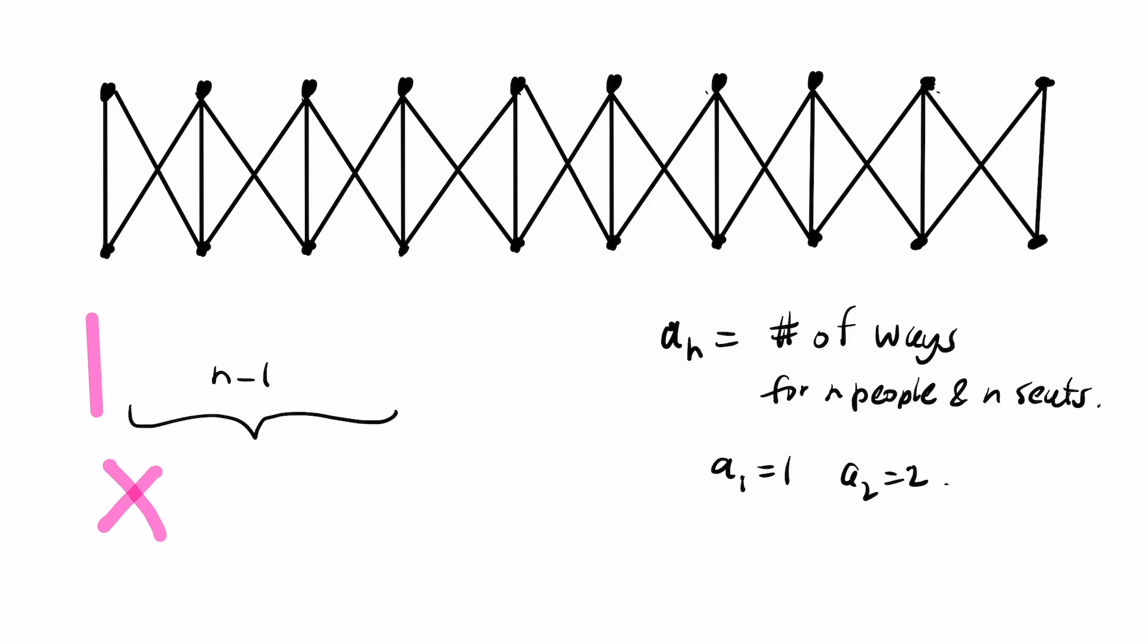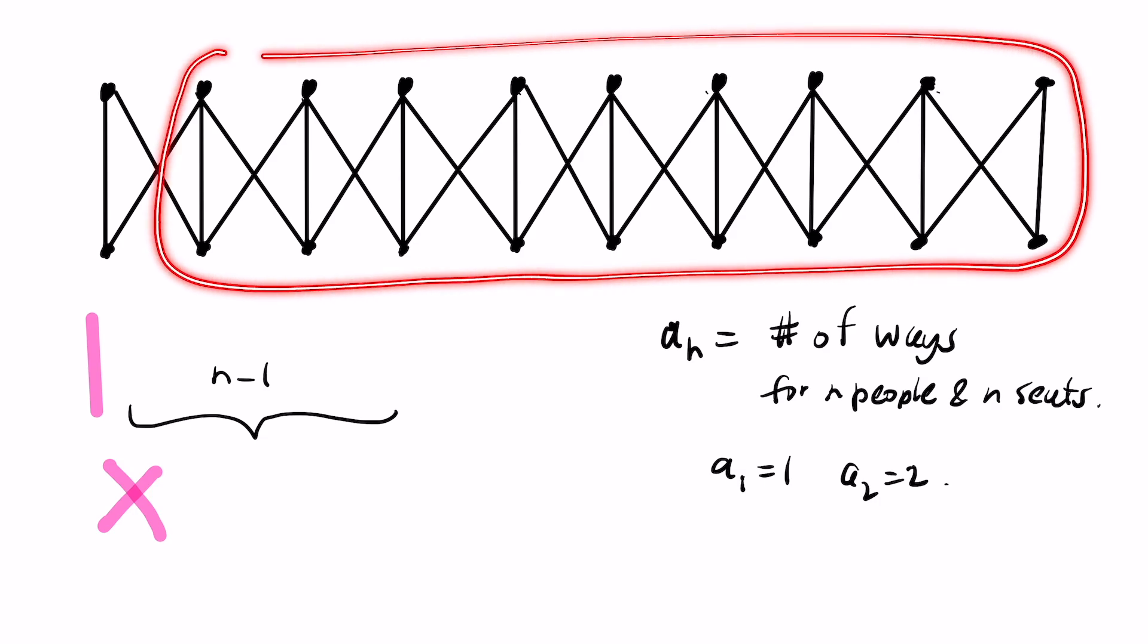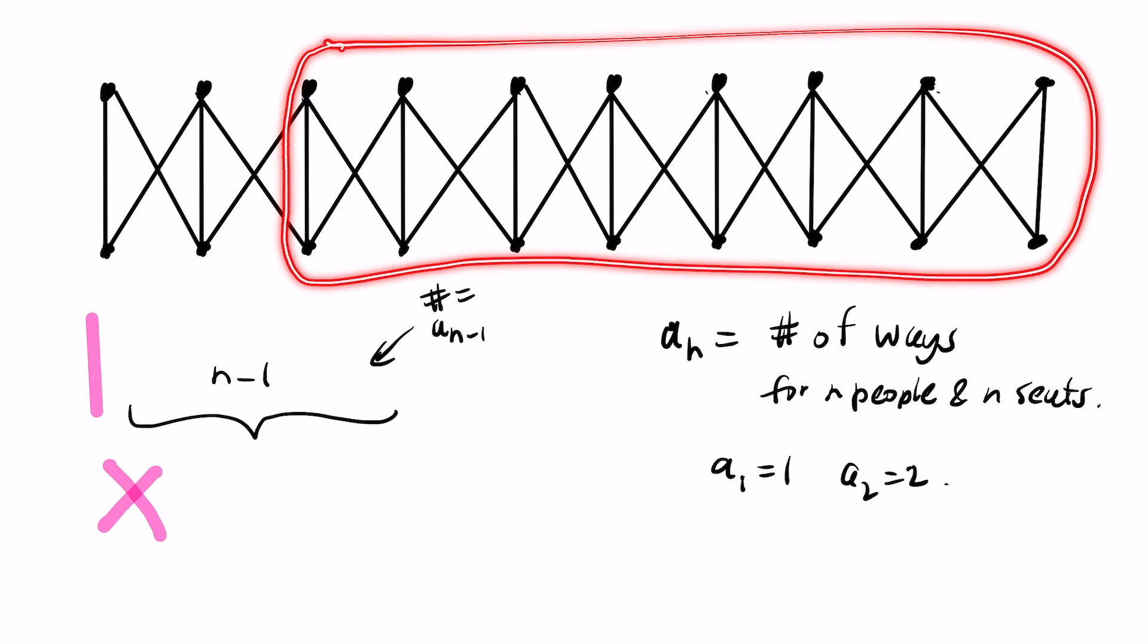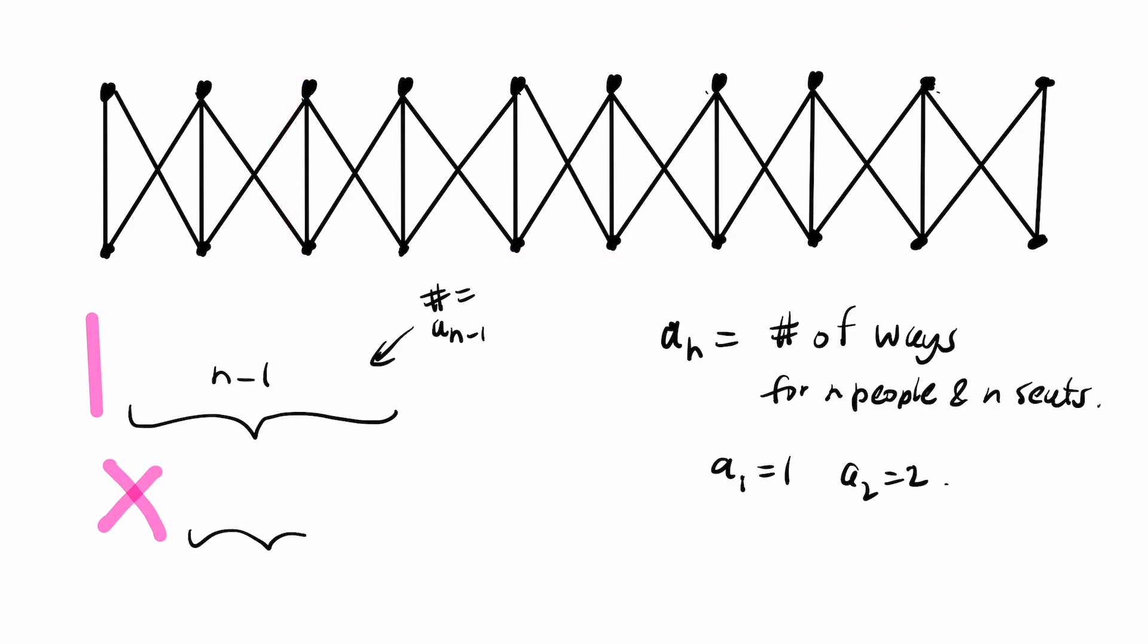Now, if it starts with a straight line, we have to match the remaining n minus 1 people to the n minus 1 seats. And the number of ways of doing that is actually a sub n minus 1. Similarly, if we start with an x, then we have to match the remaining n minus 2 people. And so we get that the number of ways to do that is a sub n minus 2. And so for n at least 3, we have that a sub n is a sub n minus 1 plus a sub n minus 2.